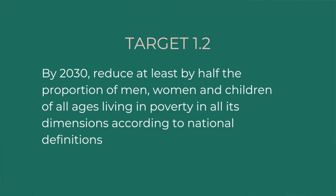Target 1.2: by 2030, reduce at least by half the proportion of men, women, and children of all ages living in poverty in all its dimensions according to national definitions. This target is focused on the national or country level context, because money is not the same everywhere. For example, a dollar in Switzerland does not go as far as a dollar in Canada, but in Burkina Faso that dollar would go much further. So it's important that a poverty line is set relevant to the living context of that country.